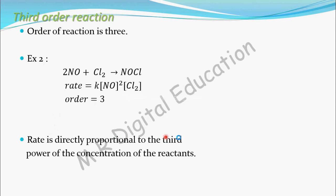For third-order reactions, the rate is directly proportional to the third power of the concentration of the reactants. The rate equation reflects this order — 2 + 1 — giving the third power of the concentration of the reactants.